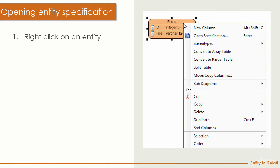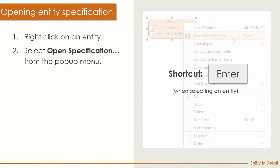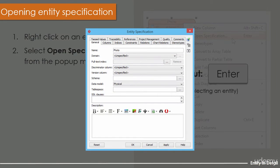To open the specification dialog box, right-click on the entity and select Open Specification in the pop-up menu. Alternatively, select the entity and just hit the Enter key.